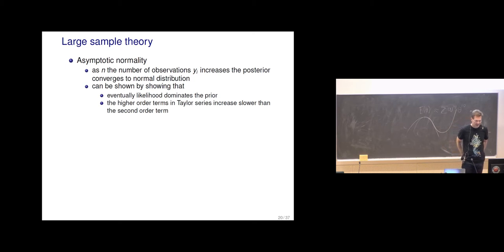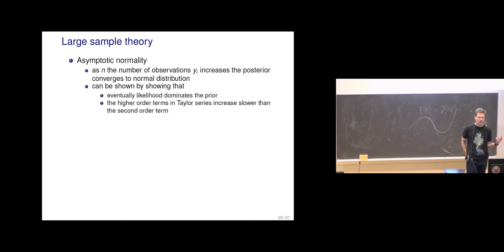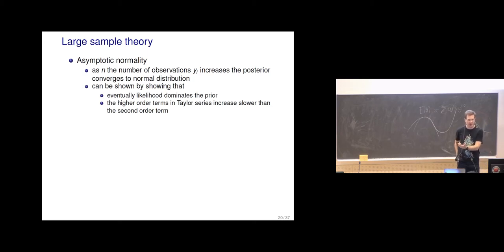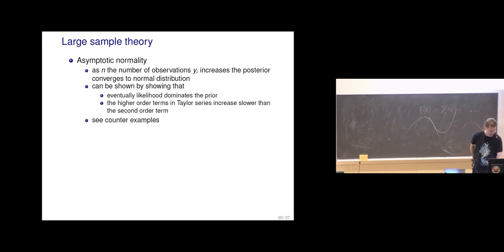One thing about asymptotic normality is that higher-order terms in the Taylor series increase slower than the second-order term, so those terms are smaller. There was also the point that eventually the likelihood dominates the prior. From the prior we get just one term and it's not updating. You can also remember from conjugate prior examples that conjugate priors could be imagined as some number of prior observations. As you get more and more likelihood terms they start to dominate, and then you can work out the Taylor series expansion.